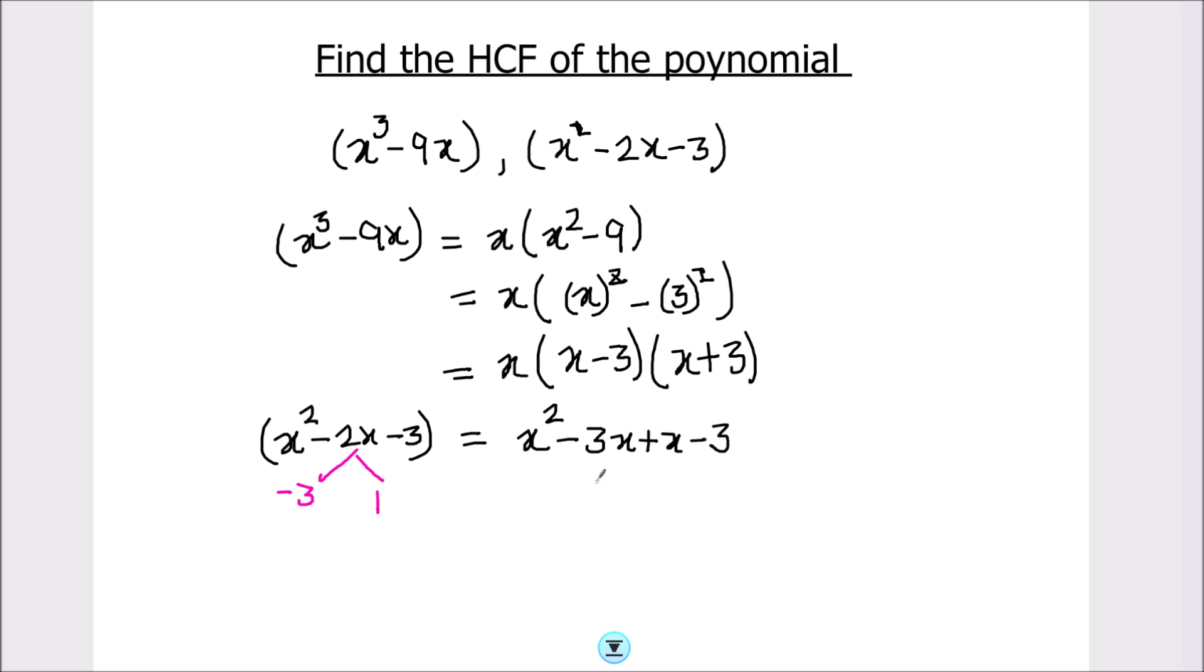-2x equals -3x + x. Now we can factor it. We will take x common so this is x(x - 3). And from here we can take +1 common so this is (x - 3).